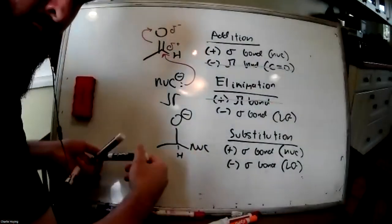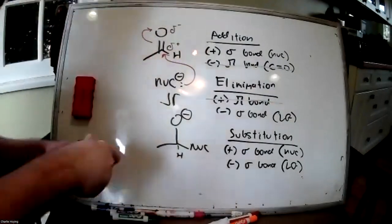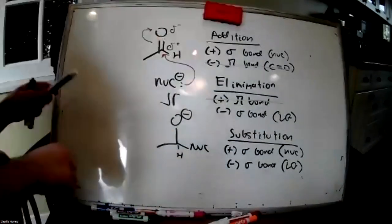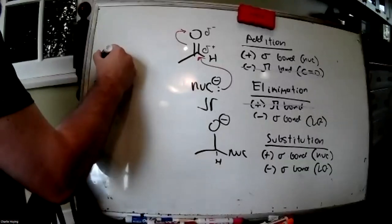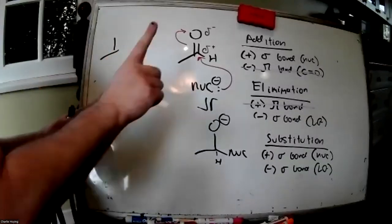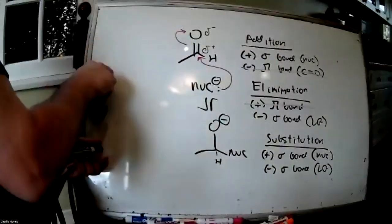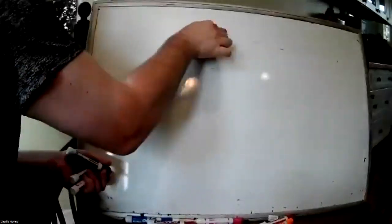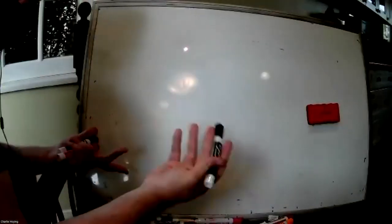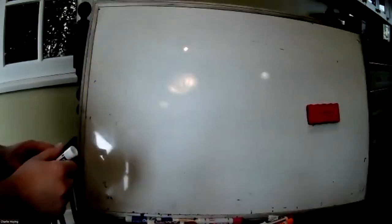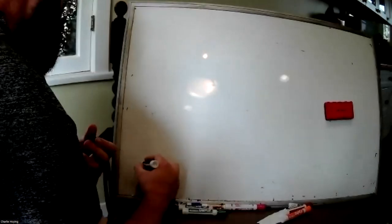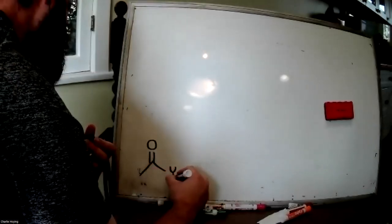So carboxylic acid derivatives will be doing a net substitution reaction. For their generic addition-elimination, we'll first talk about the reactivity order. We specified that aldehydes and ketones have a minor resonance structure contributor. This is going to be true with carboxylic acid derivatives as well, and if we show those minor resonance structures, all carboxylic acid derivatives have a group Y instead of another carbon or hydrogen.